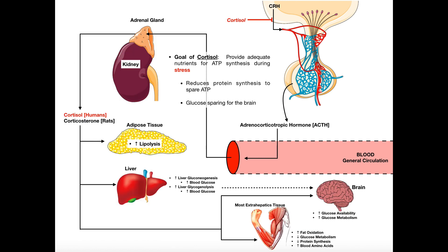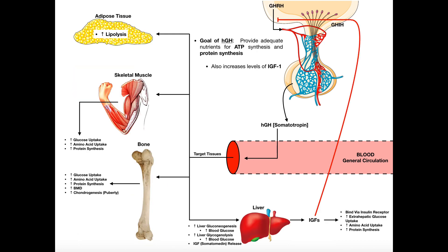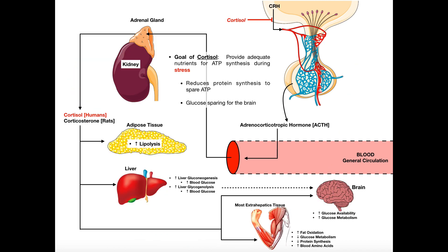We're now going to switch gears and talk about cortisol. What we're going to see with cortisol is that there are some overlapping features between it and the thyroid hormones and growth hormone. However, cortisol has another major function and a major difference, and it's going to have to do with a stress response — specifically a chronic stress response.